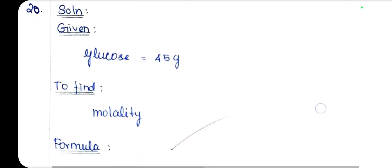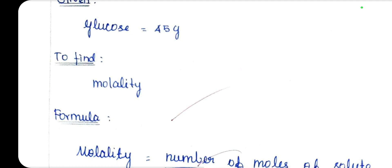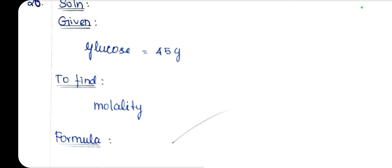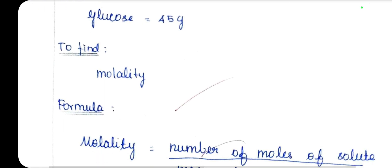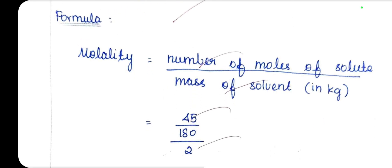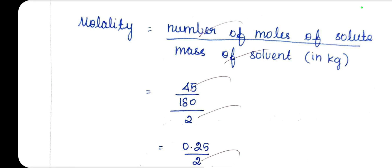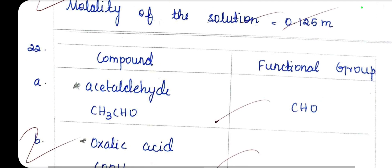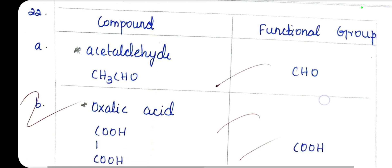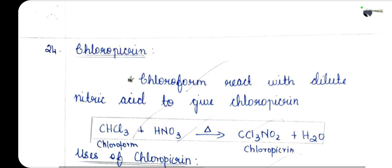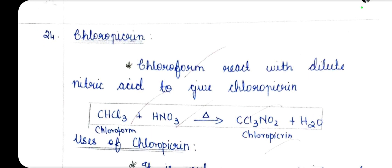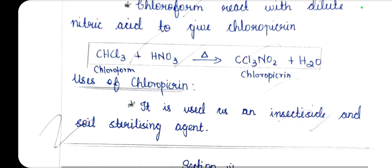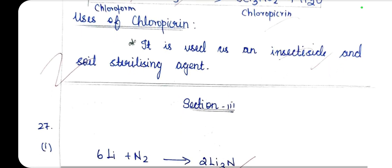Compulsory problem, question 25: 45 grams of glucose dissolved in 2 kilograms of solvent. The weight of solvent is 2 kilograms. To find molality, the formula is moles of solute divided by weight of solvent in kg. Moles of glucose = mass/molar mass = 45/180 = 1/4 = 0.25. Molality = 0.25 divided by 2 = 0.125 mol/kg. The molality of the solution is 0.125.